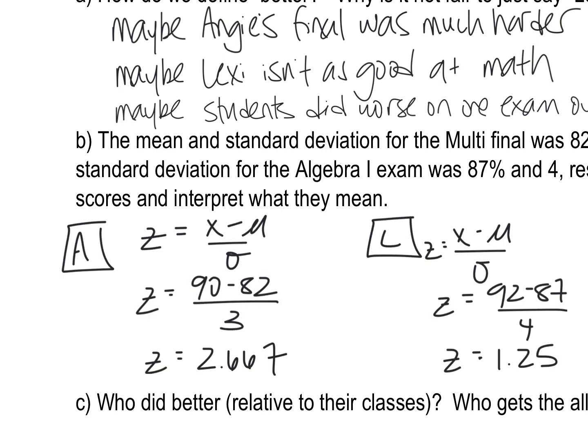So I plugged in those numbers. I took the average for Angie's score minus the average for multi divided by the standard deviation for multi. Same thing with Lexi. She had a different average and different standard deviation because she took a different final.